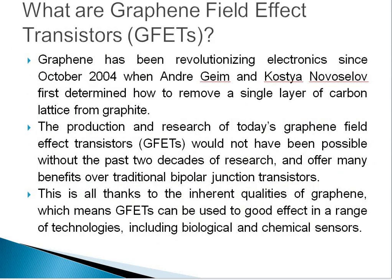Next, what are graphene field effect transistors? Graphene has been revolutionizing electronics since October 2004, when Andre Geim and Kostya Novoselov first determined how to remove a single layer of carbon lattice from graphite. The production and research of today's graphene field effect transistors would not have been possible without the past two decades of research, and they offer many benefits over traditional bipolar junction field effect transistors. This is all thanks to the inherent qualities and properties of graphene, which means graphene field effect transistors can be used in a range of technologies including biological and chemical sensors.